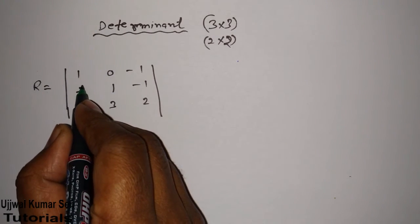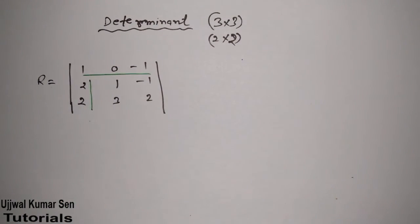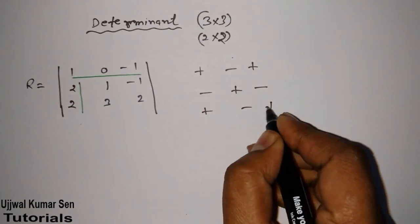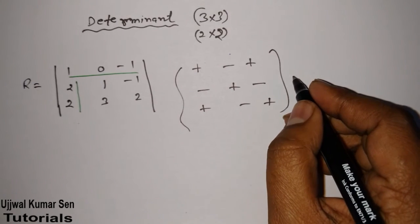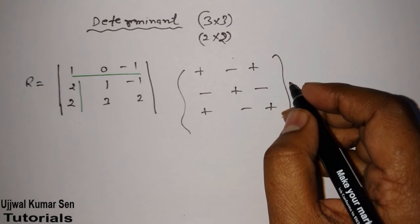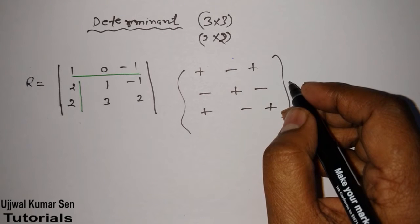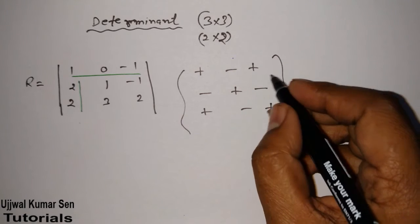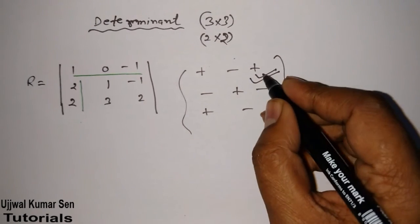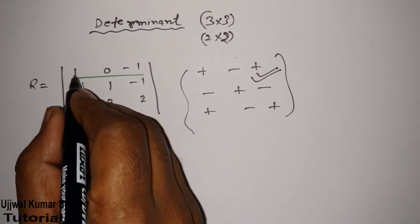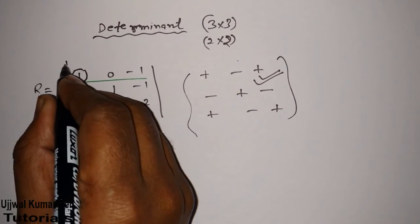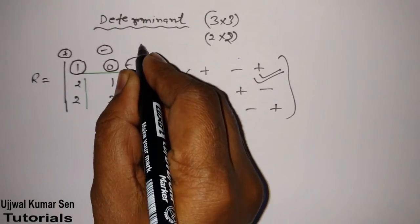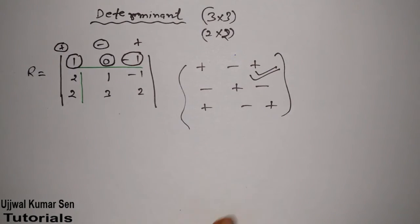First of all, we have to consider one concept: plus, minus, plus, minus, plus, minus, plus, minus, plus. This is the sign rule we need to follow. If you know how to find out the inverse of a matrix, then you probably know how to find out the determinant. We follow this plus-minus-plus pattern: if I am selecting this value, it is plus; the next will be minus; the next will be plus.